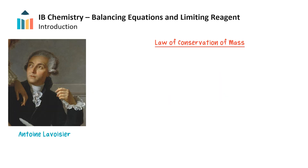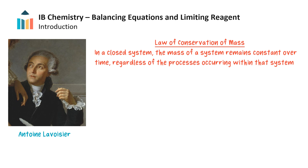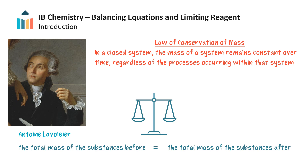In the late 18th century, French chemist Antoine Lavoisier proposed the Law of Conservation of Mass. This law states that in a closed system, the mass of a system remains constant over time, regardless of the processes occurring within that system. This means that the total mass of the substances involved in a chemical reaction or physical process, before the reaction or process, equals the total mass of the substances after the reaction or process.